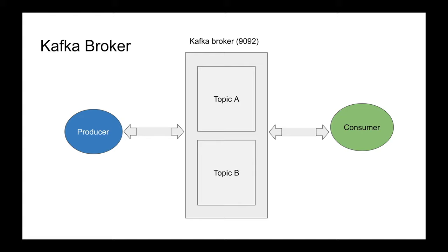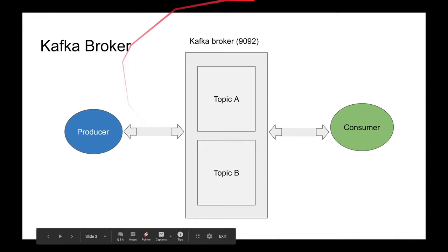Topics are a logical partitioning of data. When the producer writes, it has to specify which topic to write to — for example, write the message 'hello' to topic A. A consumer can say 'I want to consume topic B,' and the broker will send the messages to the consumer. So topics, consumer, producer, broker — those are the core pieces.